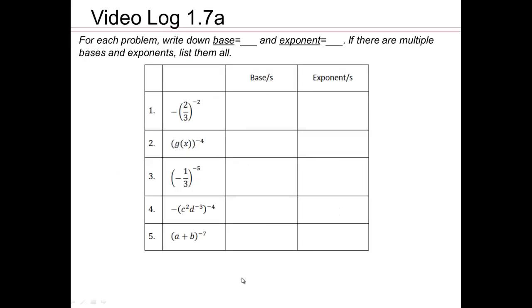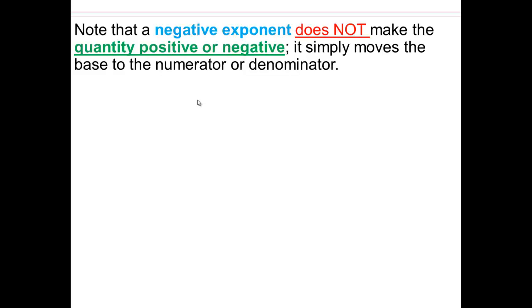Now it's your chance to identify what is the base and what is the exponent. Do not confuse the negative sign of the base with the negative sign of the exponent. In this next part of the lecture, we're going to make sure you really understand what a negative exponent does. A negative exponent does not make a quantity positive or negative — it simply moves the base to the numerator or denominator and makes the exponent positive, depending on where it's sitting.